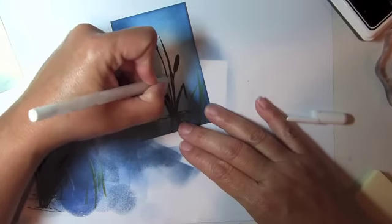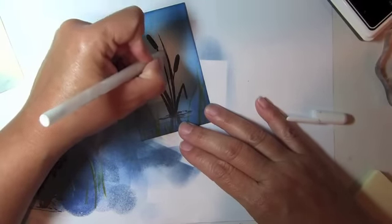Use an opaque white gel pen to add some highlights to the silhouette image.